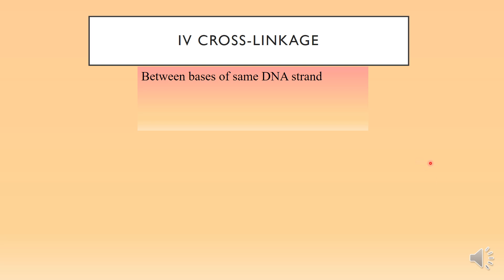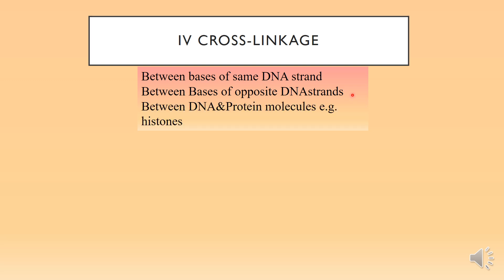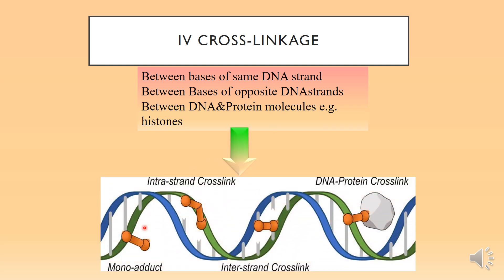The fourth type of DNA damage is cross linkage. Cross linkage can occur between bases of the same DNA strand, between bases of opposite DNA strands, or between DNA and protein molecules such as histone proteins. The diagram shows intra-strand cross links, inter-strand cross links between bases of opposite DNA strands, and DNA-protein cross linkages.